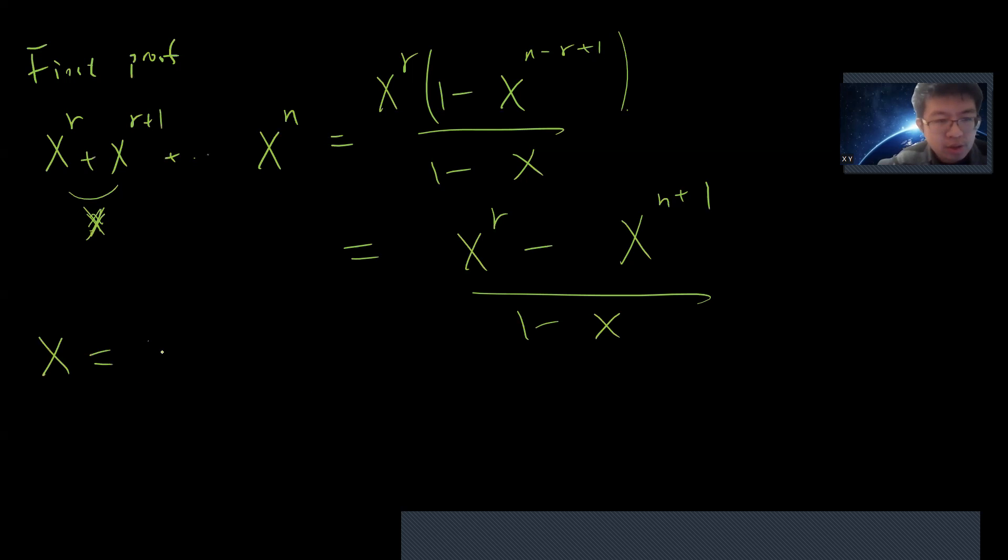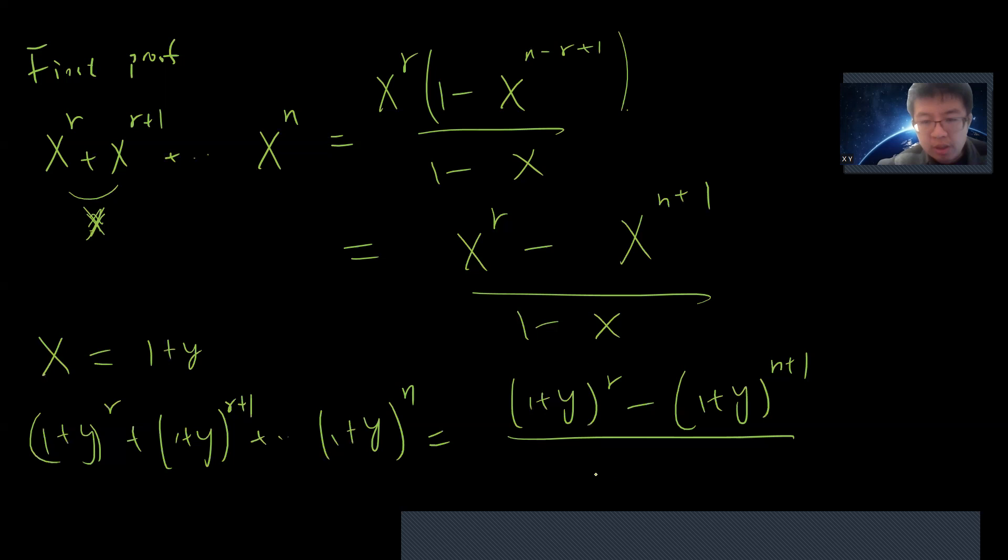Now let's consider x equals 1/(1+y). So I can get (1+y)^r + (1+y)^(r+1) up to (1+y)^n. This equals ((1+y)^r - (1+y)^(n+1)) divided by negative y.